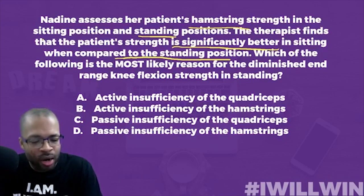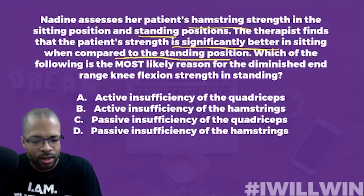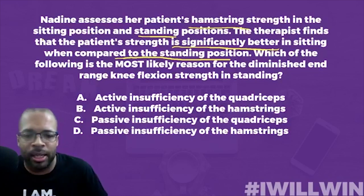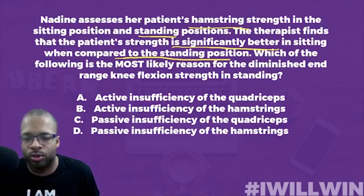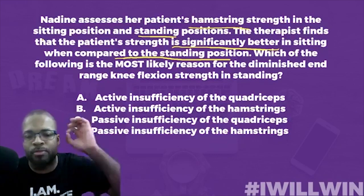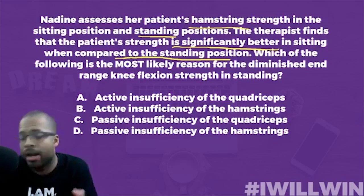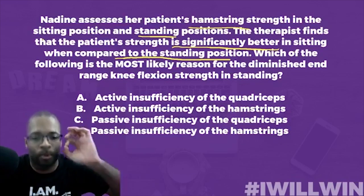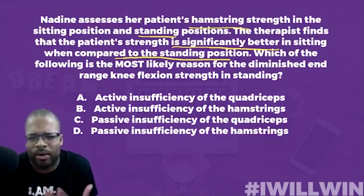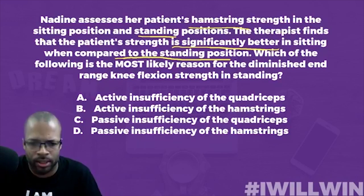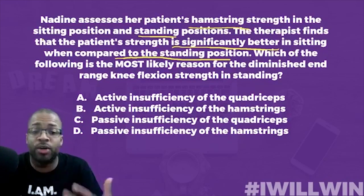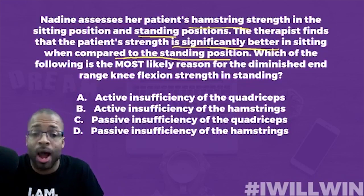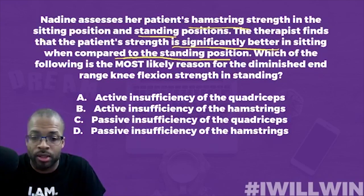Let me explain it again — no problem. It really goes back to understanding the definitions first. You cannot apply this concept if you can't recite the definition in your own terms. Active insufficiency: the inability of a two-joint muscle to generate enough force because it has become too shortened.